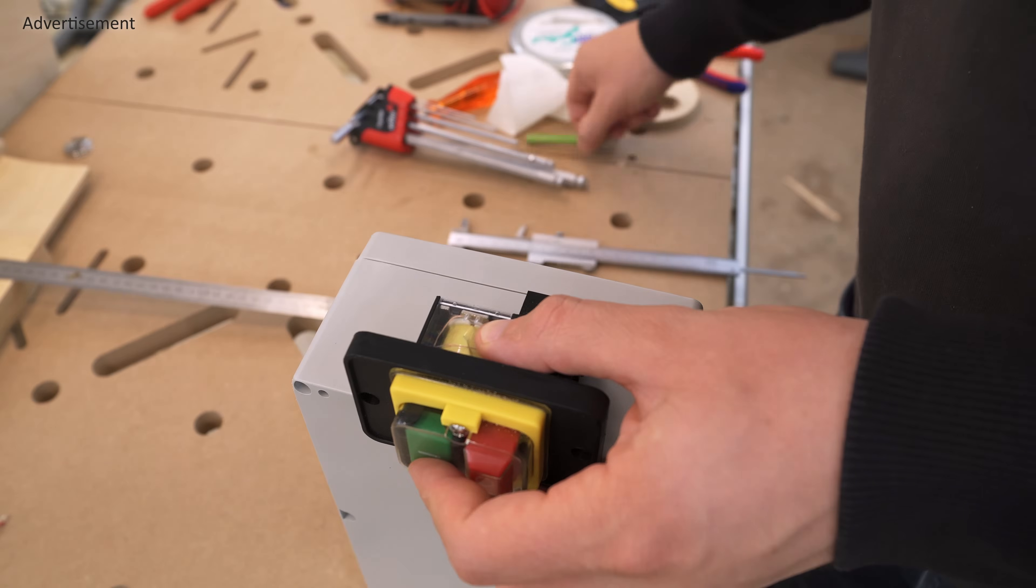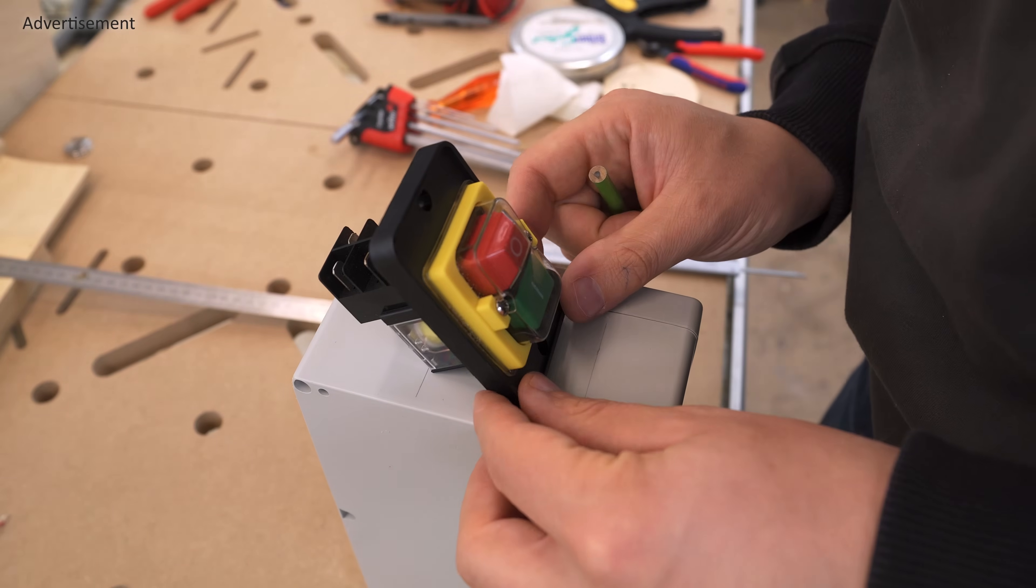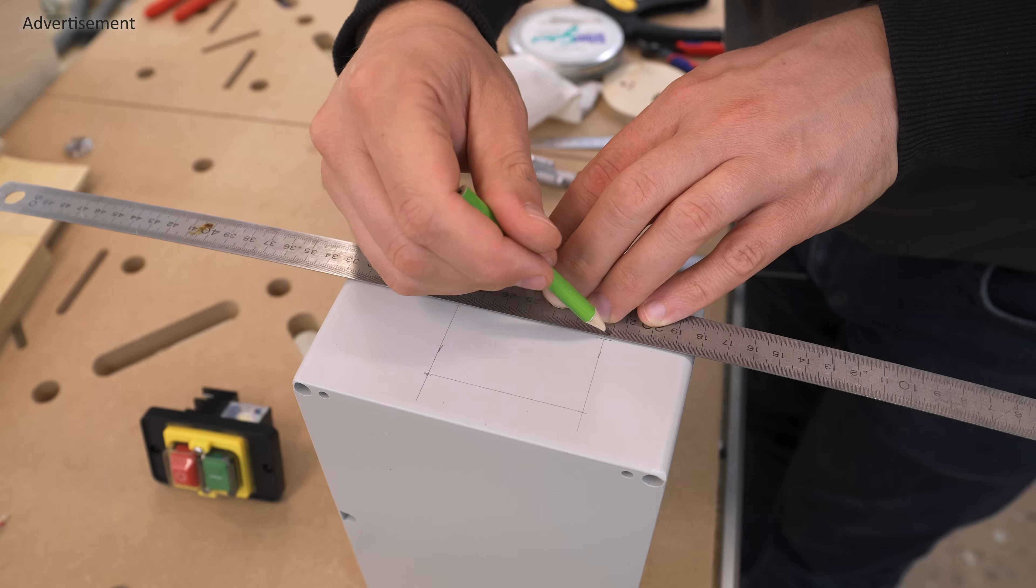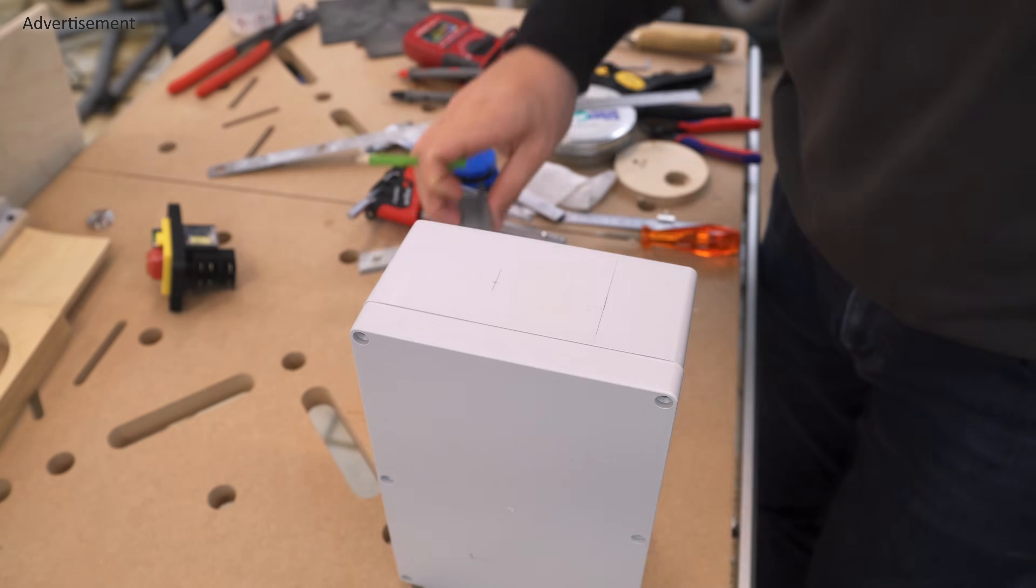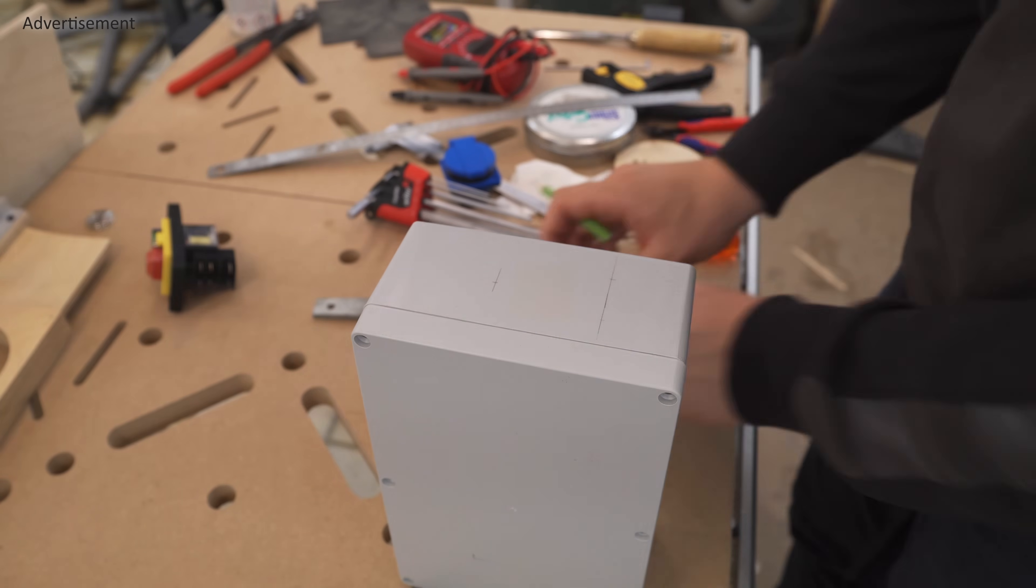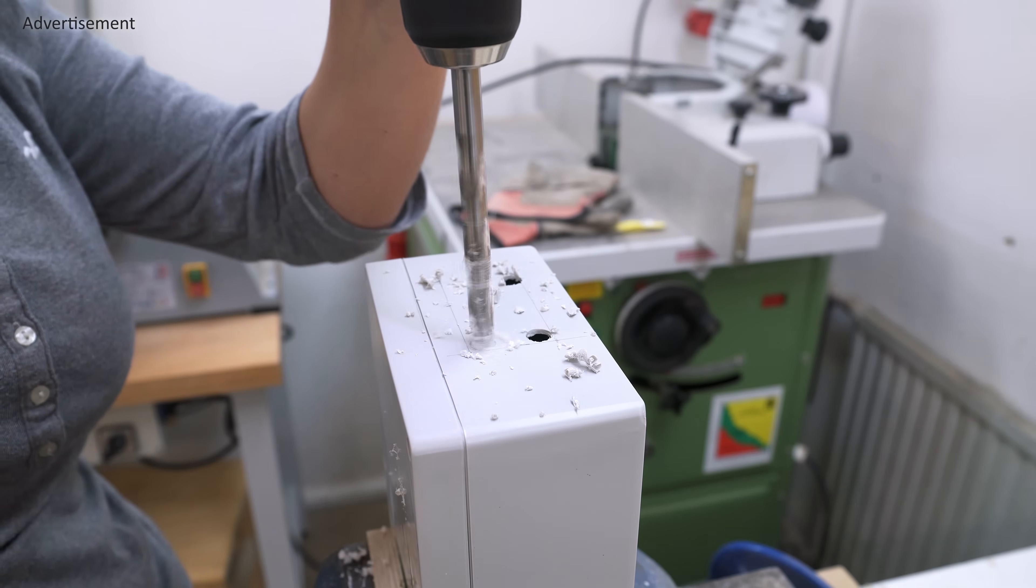This could be wired so that the blast gate opens when the original switch of a machine is pushed, for example by tapping the wire that goes to the motor, but since I want to use this for my new router table, this box will also contain the switch for the router itself.